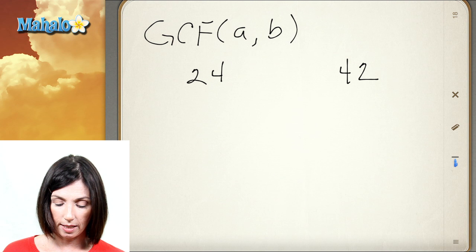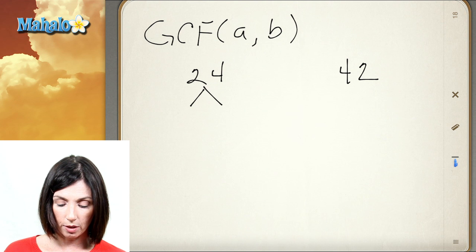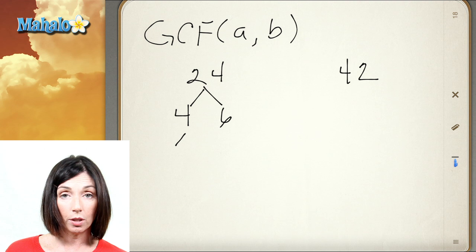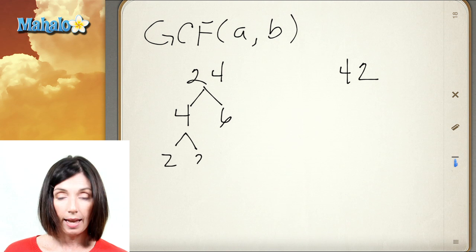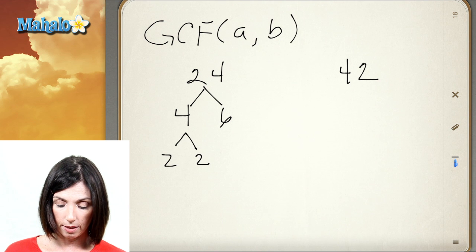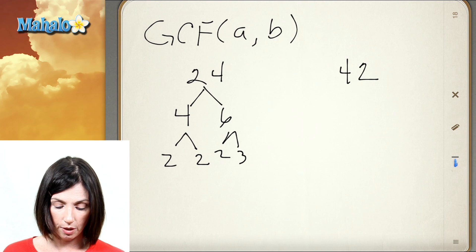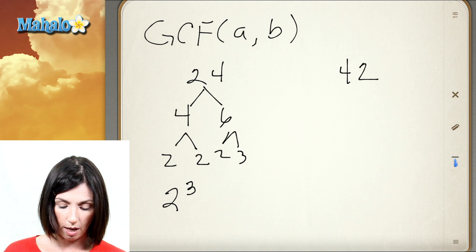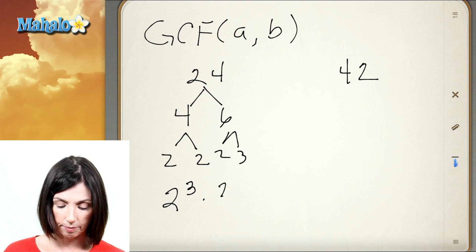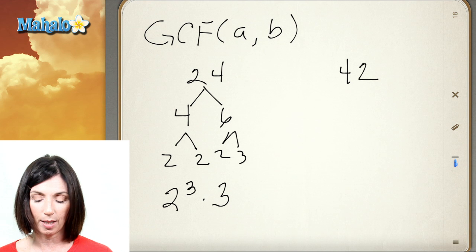24 is 4 times 6, and 4 is 2 times 2, and 6 is 2 times 3. So the prime factorization of 24 is 2 cubed times 3. That makes sense — 8 times 3.